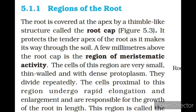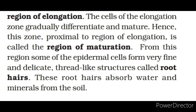Regions of the root. The root is covered at the apex by a thimble-like structure called the root cap. It protects the tender apex of the root as it makes its way through the soil. A few millimetres above the root cap is the region of meristematic activity. The cells of this region are very small, thin-walled and with dense protoplasm. They divide repeatedly. The cells proximal to this region undergo rapid elongation and enlargement and are responsible for the growth of the root in length. This region is called the region of elongation.